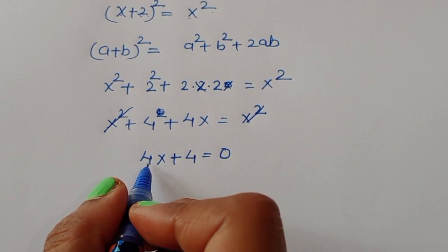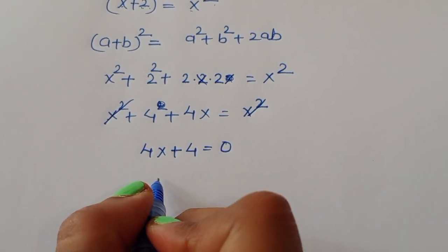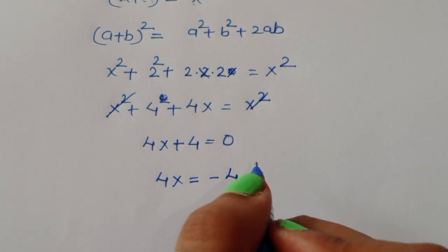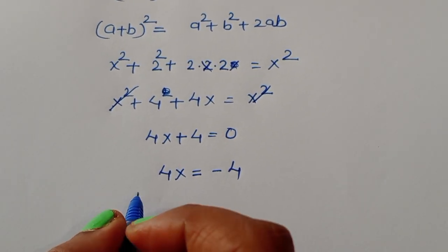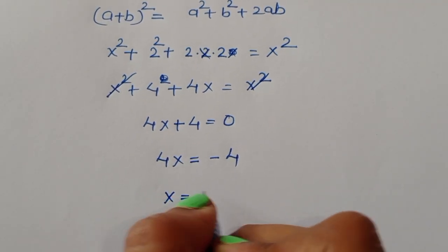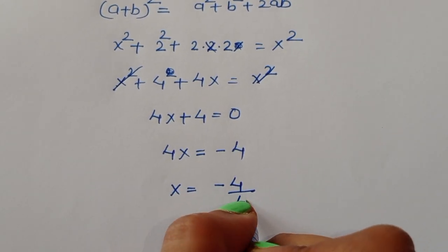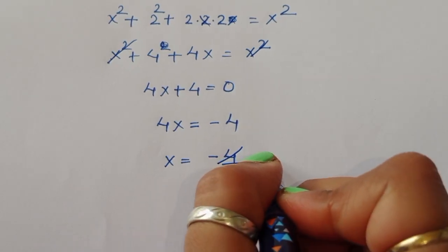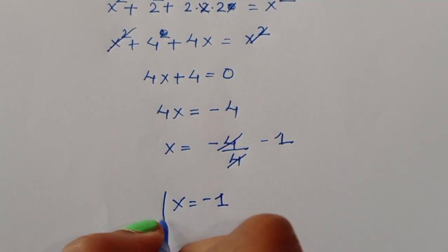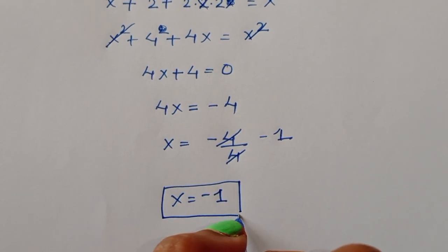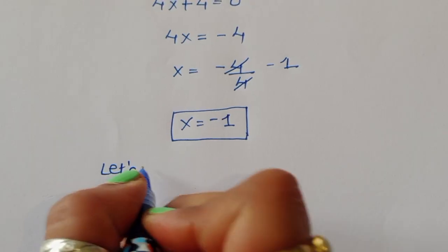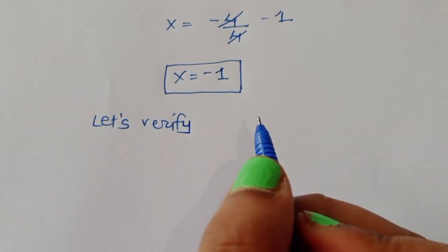Now 4x + 4 = 0, so 4x is equal to minus 4. Dividing both sides by 4, we get x is equal to minus 4 divided by 4, so the value of x is equal to minus 1.